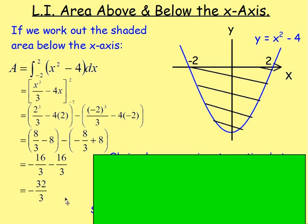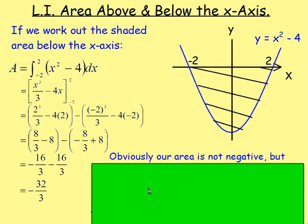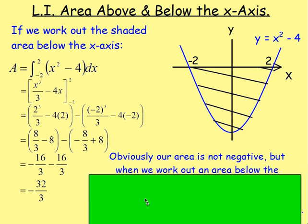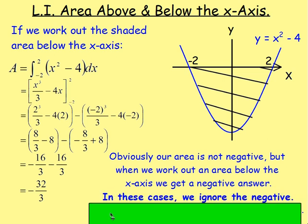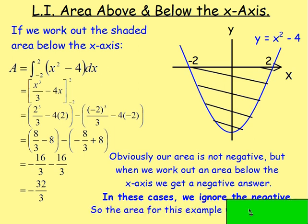What does that mean? We've got a negative. You can't get a negative area. What does this mean? Well, obviously the area is not going to be negative. But sometimes when we're integrating, if you integrate an area that's below the x-axis, you will end up with a negative answer. What do you do in these cases? It's nice and easy — you ignore the negative. So the area for this example would just be 32 over 3. So the rule is, just ignore the negative.